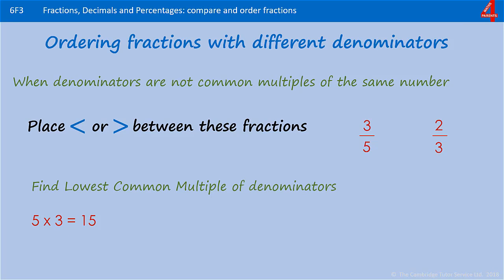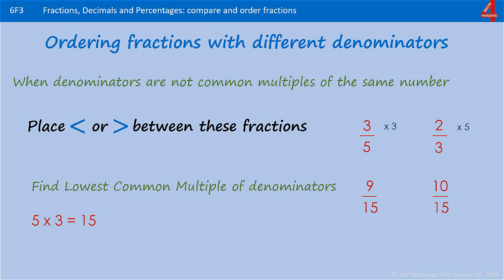This isn't always the case — there are some lowest common multiples where you will find a smaller number than merely multiplying the two together. So we can make both our denominators 15. To get from five to 15 we multiplied the denominator by three, so we're going to multiply the numerator 3 by 3 to get 9. For two-thirds we had to multiply the 3 by 5, so we're going to multiply the 2 by 5 to give us 10 over 15.